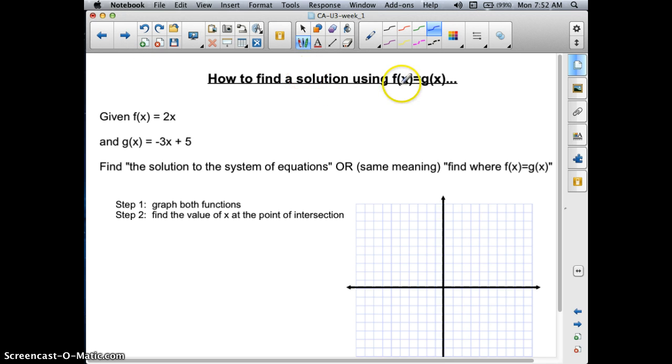But for right now, when you see something like this, you read it f of x, and this one would be g of x. We use f and g to name functions in terms of x. For right now, know that f of x is just there in place of the y, and the same thing for g of x.